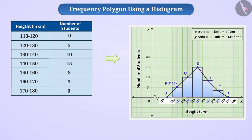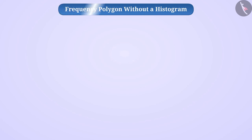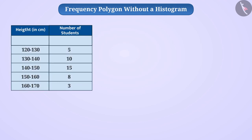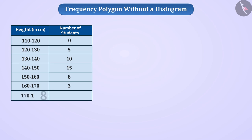Similarly, frequency polygons also help in comparing two different figures of similar nature. Now let us learn how to make a frequency polygon without a histogram. Here also, we will take the first class interval 110 to 120, before class interval 120 to 130, whose frequency is 0. Similarly, after class interval 160 to 170, we will take class interval 170 to 180 whose frequency is also 0.